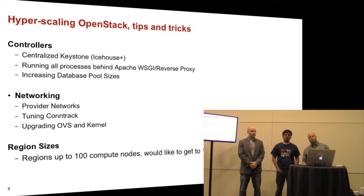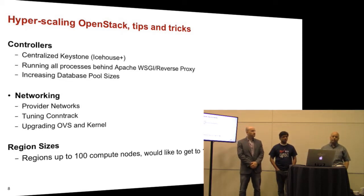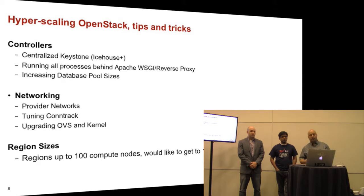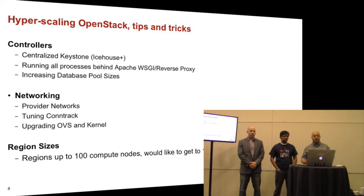We upgraded our Open vSwitch software and kernel to achieve line-rate speed on our OpenStack compute nodes. We currently deploy regions with up to 100 compute nodes. Our goal is to scale to 1,000 nodes in a region within the next year, and we're working with the community on what it will take to get there. Some larger-scale vendors and operators are already getting 300-plus compute nodes in a region.